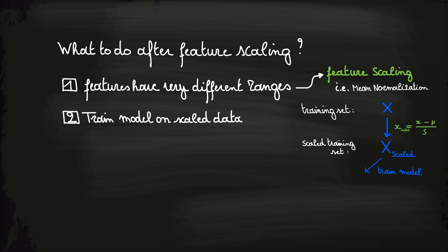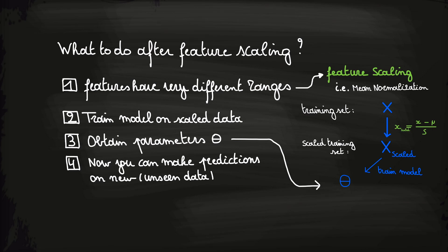After training, you obtain your parameters theta that are trained on the scaled dataset. Now, you are able to make predictions on new, unseen data. However, if you do this, you also need to transform this new unseen data with the same scaling transformation as you did on the training data. And finally, if you want to interpret the model's predictions in terms of the original scale, you should invert the scaling transformation. This is done by applying the scaling in the reverse order, just like this.